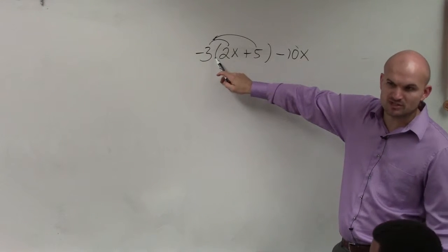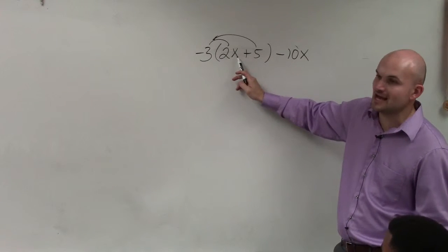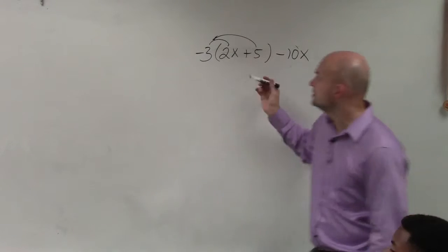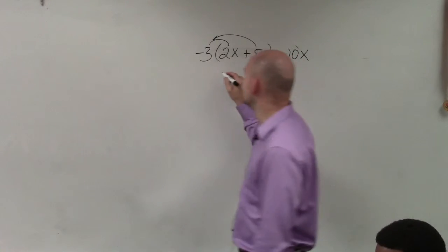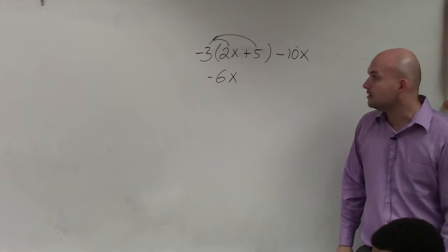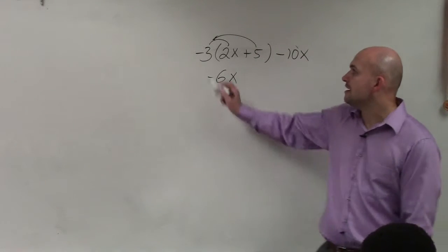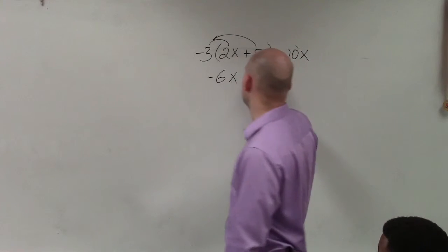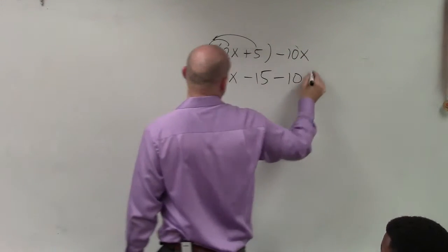Well, here we don't have the variable term, which is x to the 0. x to the 0 times x to the first would just be x. So then negative 3 times 2 is a negative 6x, OK? So we don't need to change the variable. That's just going to remain x. And then negative 3 times 5 is a negative 15 minus 10x.